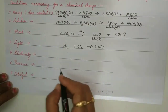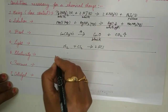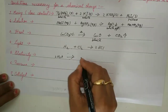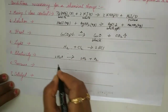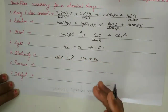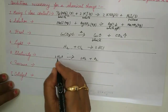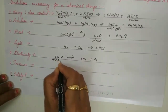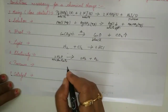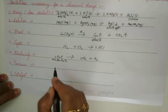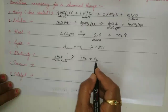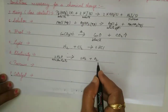The fifth condition is electricity. Water, when electricity is passed through it, gives hydrogen and oxygen. Pure water will not allow electricity to pass through, so we have to acidulate it — generally with dilute sulfuric acid. A few drops of sulfuric acid are added to water, and when electricity is passed through it, hydrogen and oxygen are released. Please check the balancing.